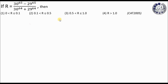Hi, this is Prakash from 60 Seconds. Today we will look at a problem on indices. The question is: r equals 30 to the power 65 minus 29 to the power 65, divided by 30 to the power 64 plus 29 to the power 64. We have to find out the range of value of r.